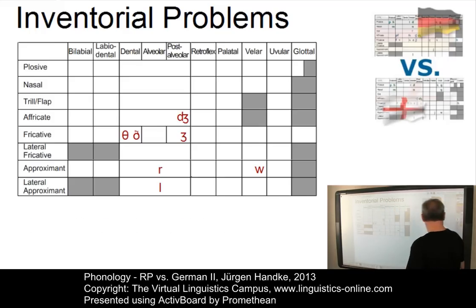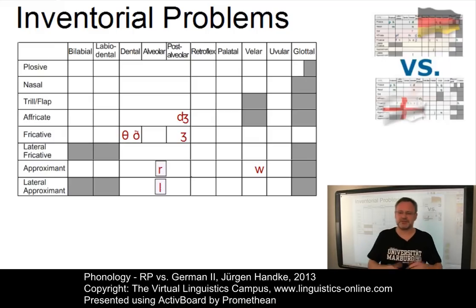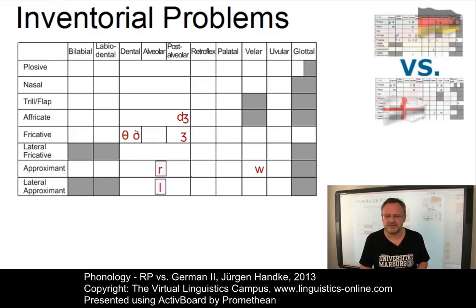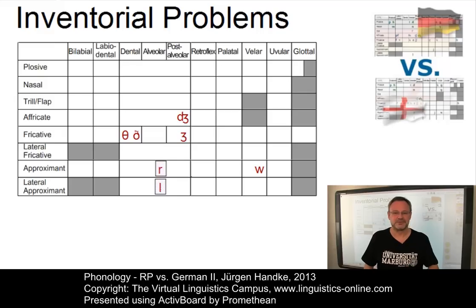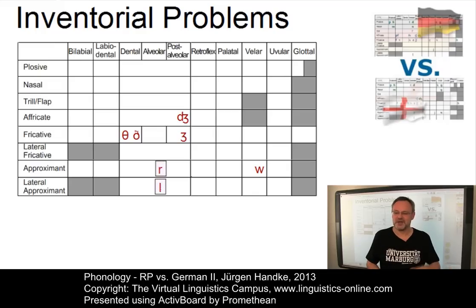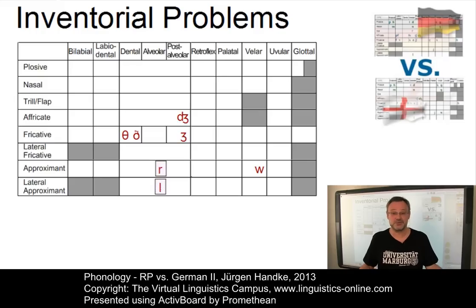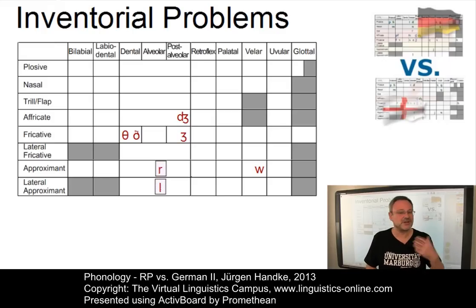A second case of inventorial problems concerns particular allophones — you might call this a realisational problem too. The alveolar lateral is a special case for German learners: word-initially it is not problematic, but after vowels many Germans cannot produce the dark L. One trick is the Cologne example — almost all Germans know how speakers with a Cologne accent pronounce 'Kölsch', and they use a dark L. If that still doesn't work, the only remedial action is articulatory: show animations and point out the exact tongue position.